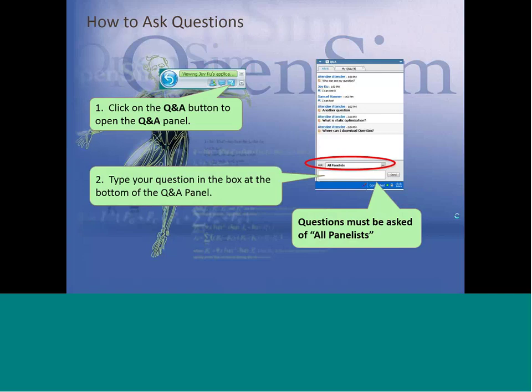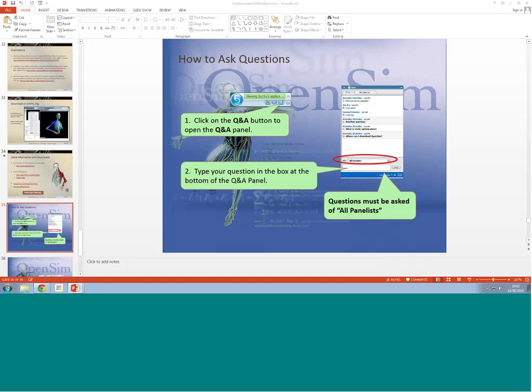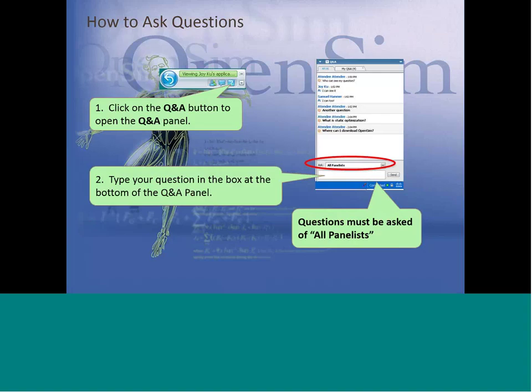So as I mentioned at the beginning of the talk, all of our questions will be text-based. What you need to do is go to the Q&A panel, type your question in the box, and make sure you select all panelists before you send in your questions. So that's pretty easy. Hopefully you guys have some questions for Ed. Go ahead and type your questions. Get those in.